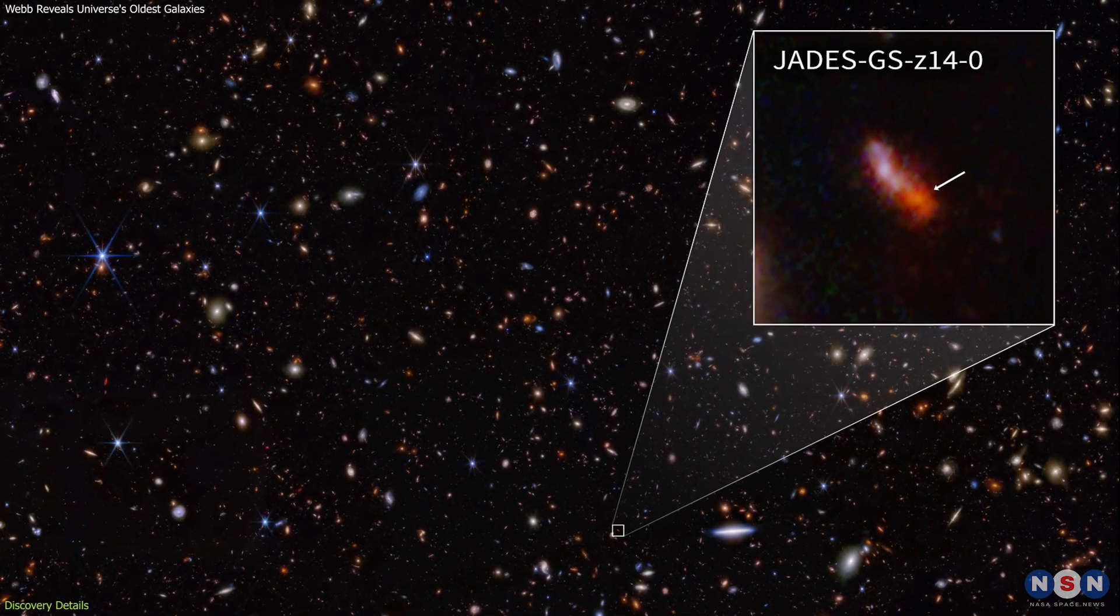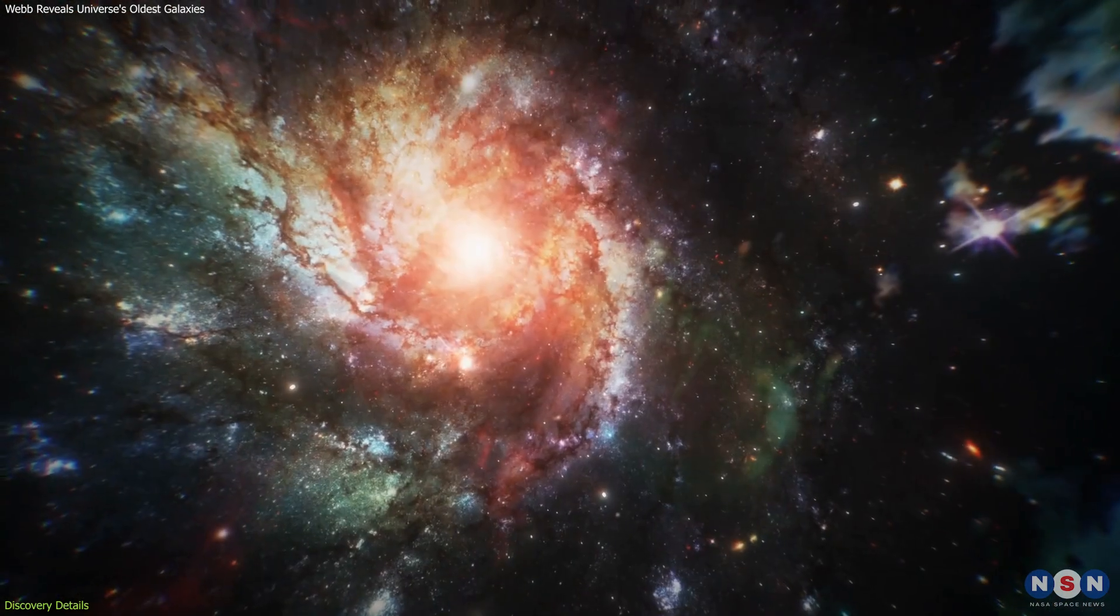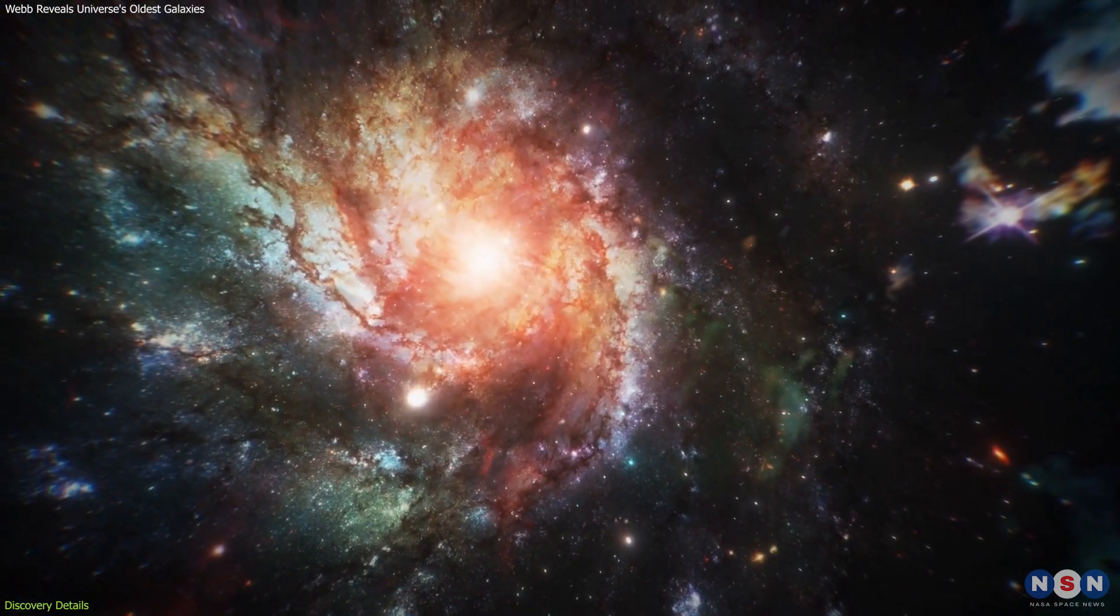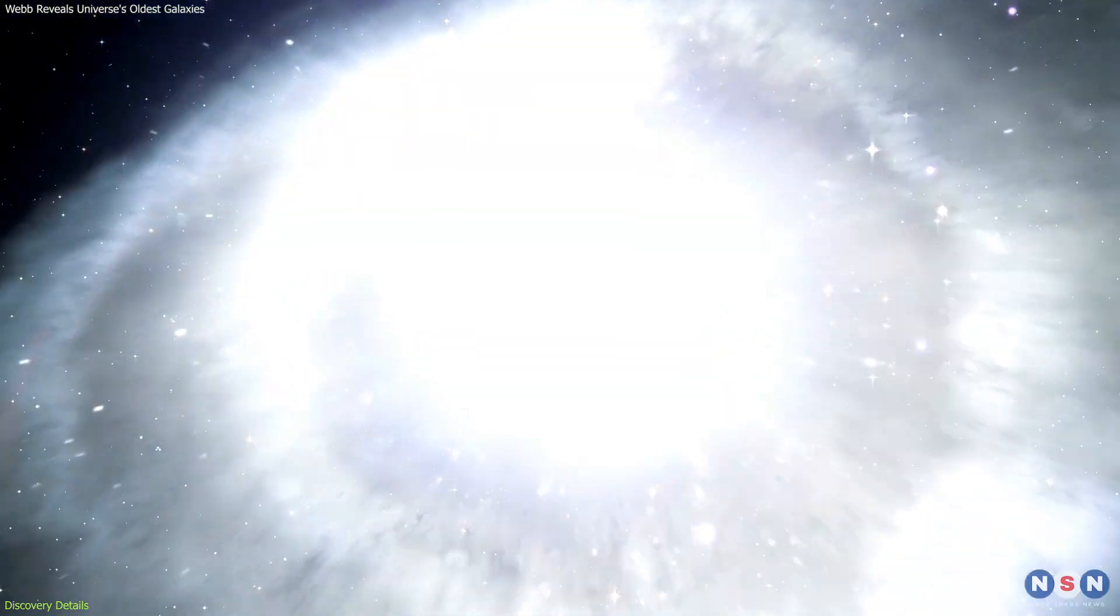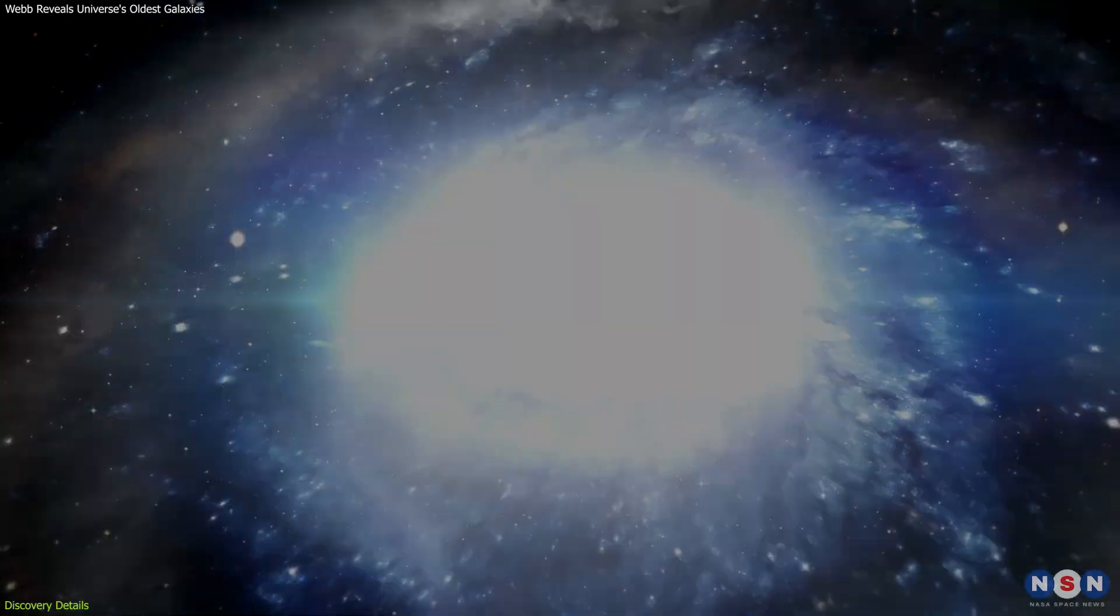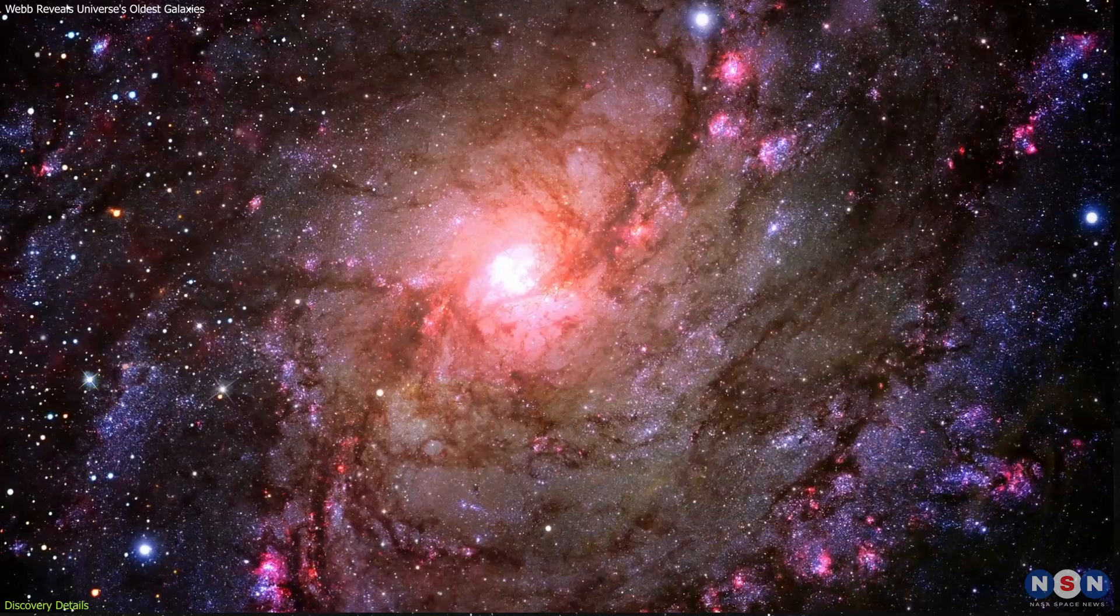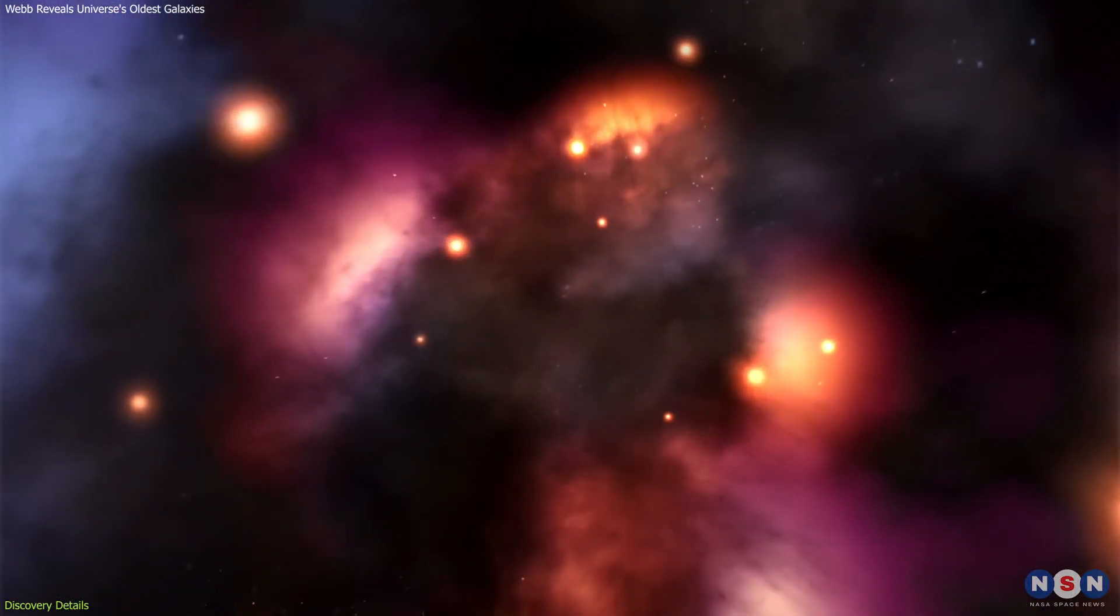The first galaxy, which is the more distant and significant of the two, stands out due to its impressive size and brightness. This large galaxy is filled with young stars, suggesting that it formed quickly and effectively early in the universe's history. The abundance of young, massive stars within it highlights an exceptionally efficient process of star formation.